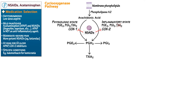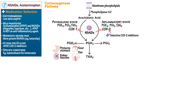NSAIDs block both cyclooxygenase 1 and 2, whereas selective cyclooxygenase 2 inhibitors — also known as COX-2 inhibitors — block cyclooxygenase 2 only. Via cyclooxygenase 1, prostaglandin E2 helps protect the gastric mucosa and impacts various aspects of kidney function, including afferent blood flow and electrolyte and fluid balance. Via cyclooxygenase 2 in the inflammatory state, inflammatory cells produce prostaglandin E2, which produces key inflammatory responses such as fever and pain. NSAIDs are therefore used for pain and fever reduction, primarily through COX-2 inhibition of PGE2.